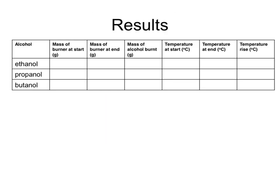A results table would look a little like this. For each of the fuels — ethanol, propanol, and butanol, three alcohols — you would have to measure the mass of the burner at the start and at the end. The mass of the alcohol burnt would be the difference between those two. You would also measure the temperature at the start and at the end of burning and work out the temperature rise.